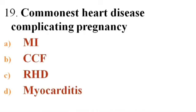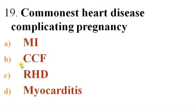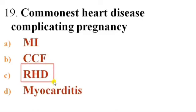Next question: Commonest heart disease complicating pregnancy. Options: A) Myocardial infarction, B) Congestive cardiac failure, C) Rheumatic heart disease, D) Myocarditis. Answer is C — Rheumatic heart disease. The commonest heart disease complicating pregnancy is rheumatic heart disease.